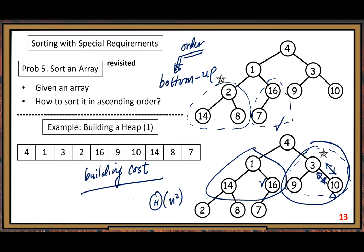We wish it's not that bad. If it's as bad as big-Theta of n², then it's useless because the building cost is too high. In that situation, we would just forget about this approach entirely.